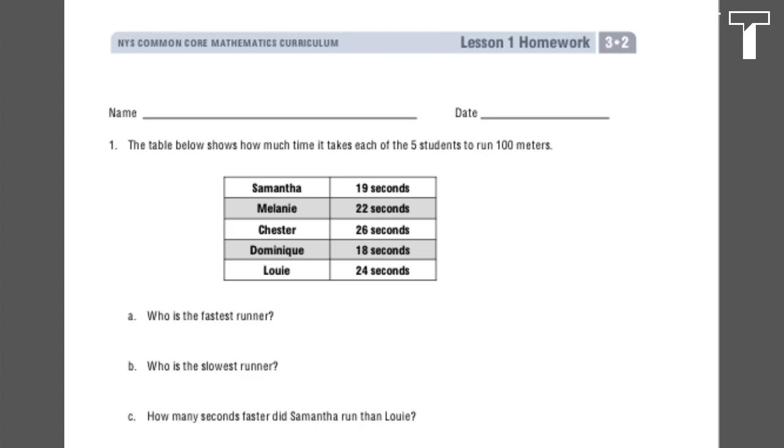Part A. Who is the fastest runner? When speaking in terms of fastest runner, we're looking for the least amount of time it takes a student to run 100 meters.